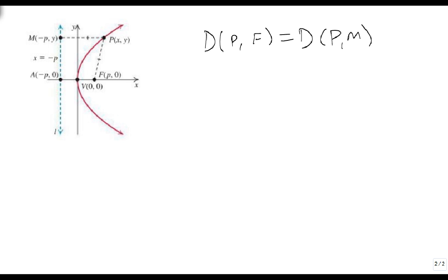So the distance from p to f is the square root of x minus p squared plus y minus 0 squared, and that's going to equal the square root of, from p to m, is x minus a minus p squared plus y minus y squared.